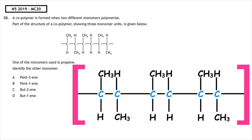This past paper question is from the National 5, 2019, multiple choice question 20. A copolymer is formed when two different monomers polymerise. Part of the structure of a copolymer showing three monomer units is given below. One of the monomers used is propene. Identify the other monomer.